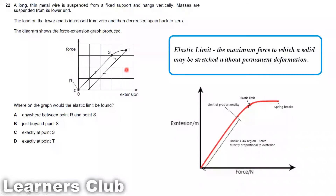The region from point R to S is known as the limit of proportionality. As you can see, it's a straight line where extension increases proportionally with the increase in force — that means force and extension are directly proportional. Just after the limit of proportionality, you have your elastic limit.